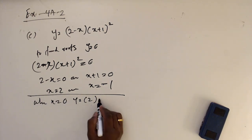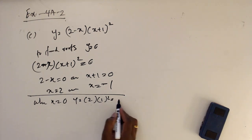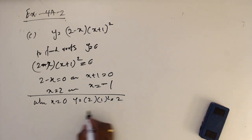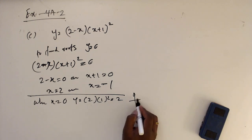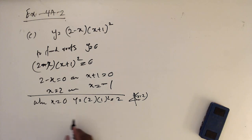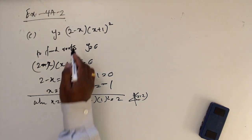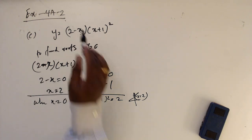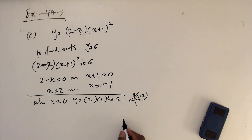When x equals 0, y equals 2 times (0+1) squared which is 2. So the curve cuts the y-axis at (0, 2). Now we can see that the coefficient of x cubed is negative.